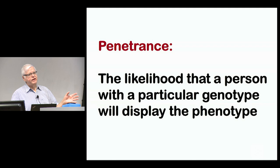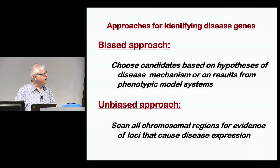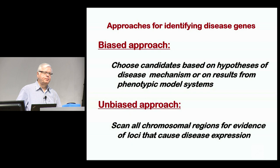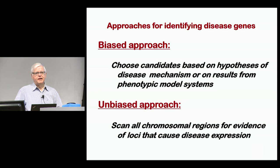If you want to go into the genome and find the DNA sequence associated with a phenotype showing a clear pattern of inheritance, you've really got two ways to go. One is to choose candidates based on hypotheses of disease mechanism or results from phenotypic model systems. This was the standard in biology up until about 1995 to 2000, where people would take a disease, understand what tissue it's affecting, make some hypothesis about how that tissue worked, and go test individual genes they thought were important. This led to an awful lot of negative results and false positive results.